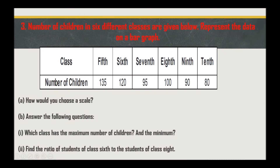The next question: the number of children in six different classes are given below — represent the data on a bar graph. Class 5: 135, Class 6: 120, Class 7: 95, Class 8: 100, Class 9: 90, Class 10: 80.